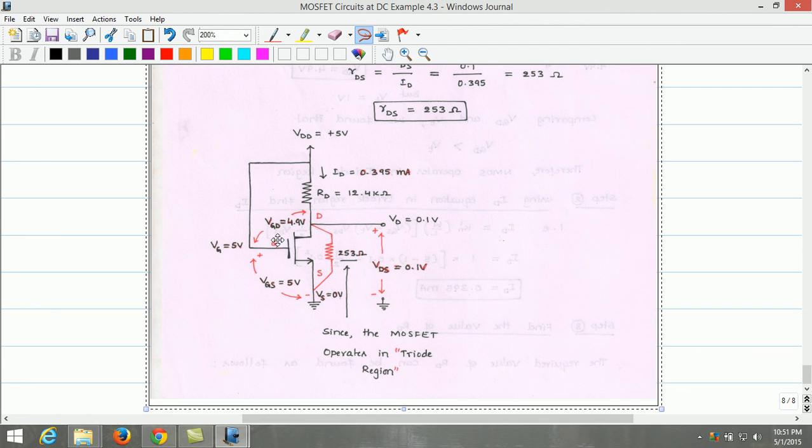Supply voltage given is 5 volt. VGD which we estimated as 4.9 volt. VGS is 5 volt. Threshold voltage of this transistor is 1 volt. So the transistor operates in triode region. The effective drain-to-source resistance is 253 ohms. The drain-to-source voltage or drain voltage equals 0.1 volt. So this is the circuit which has been designed.